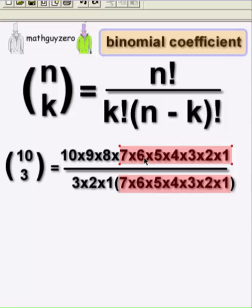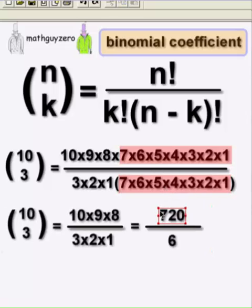You'll notice that the seven times six all the way down to one is both on a numerator and a denominator. They cancel out very nicely. Leaves you with this expression.